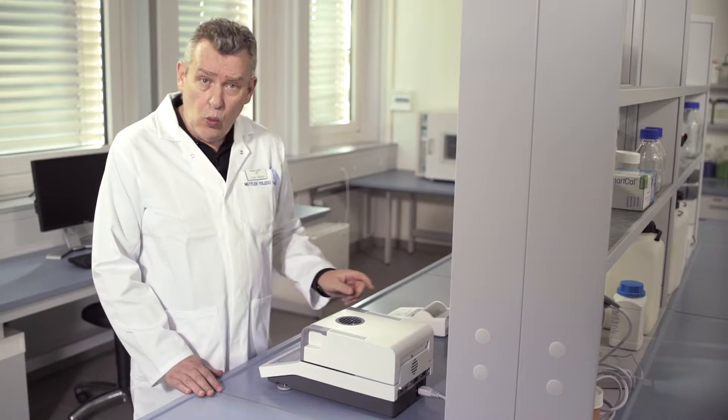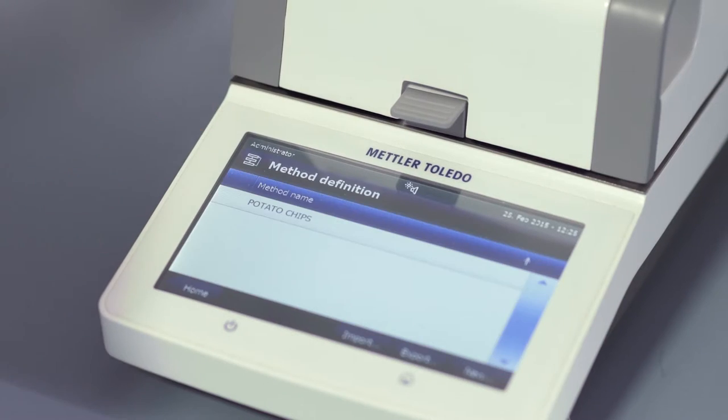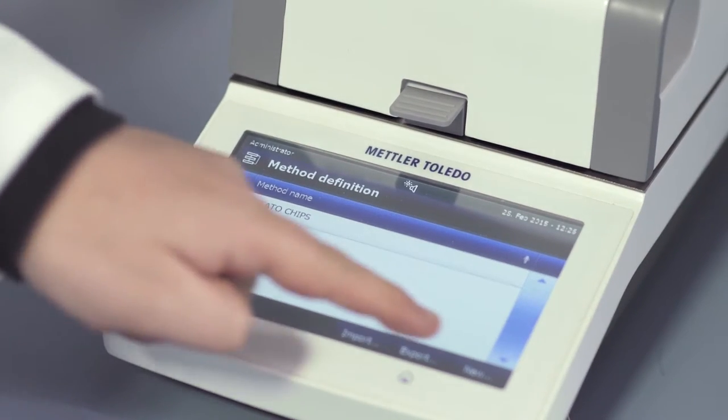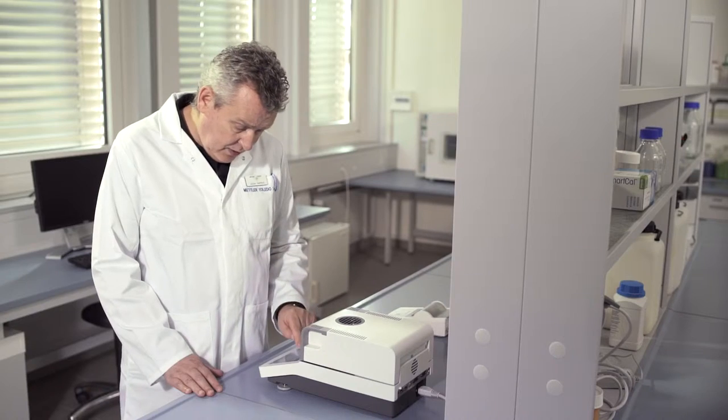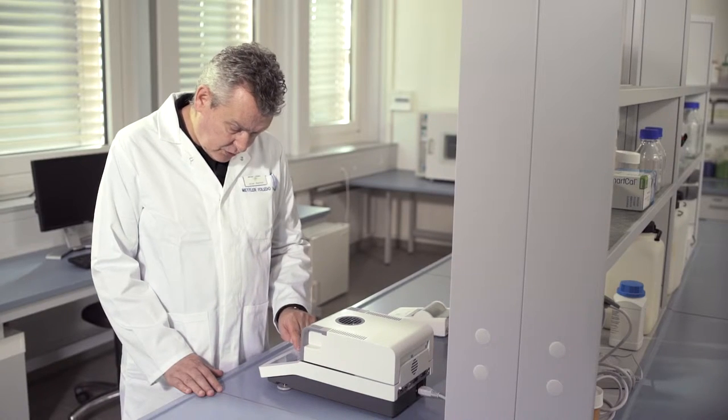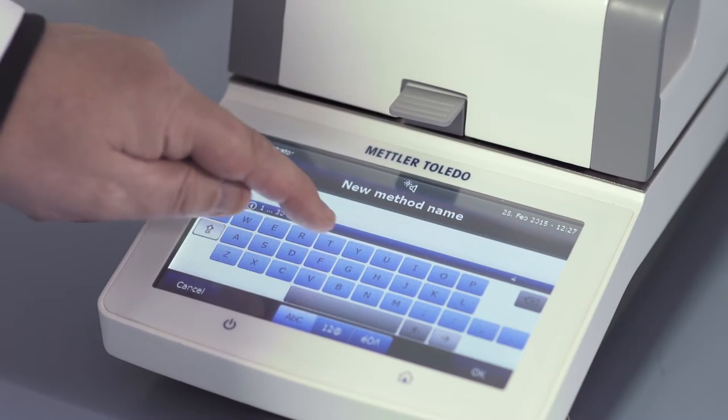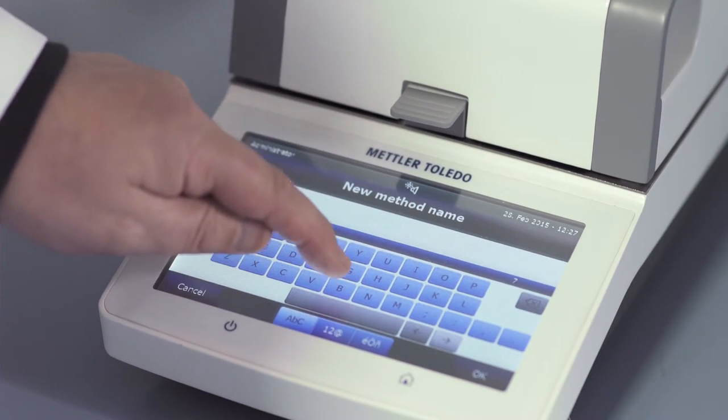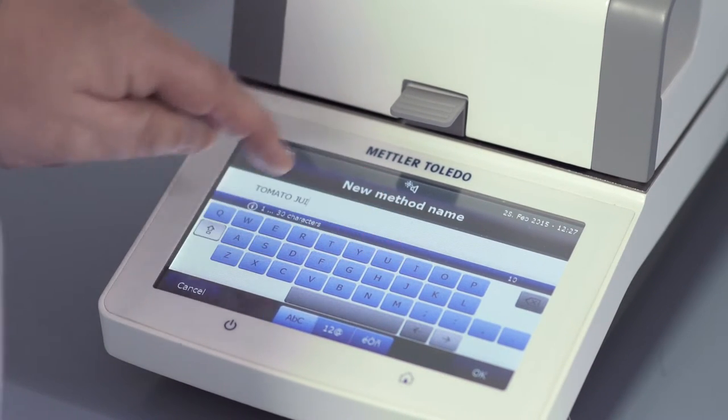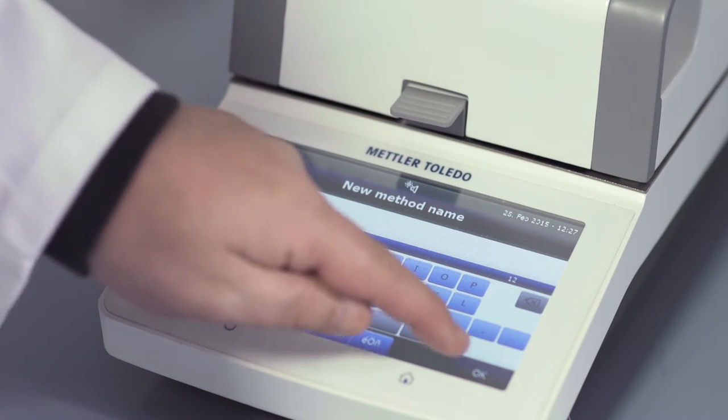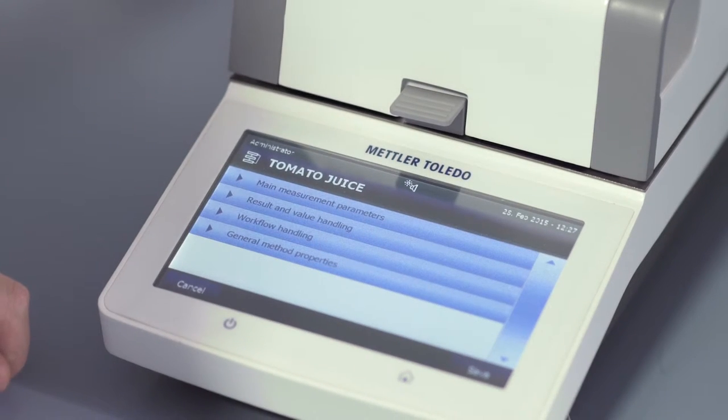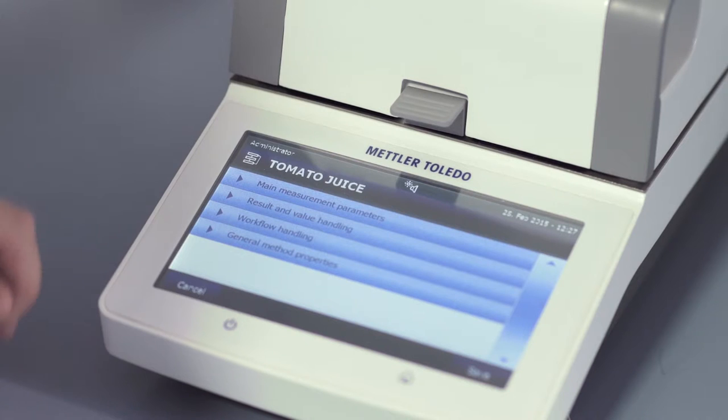As before, we press method definition, new, we type in the name tomato juice, and now we can define the method parameters.